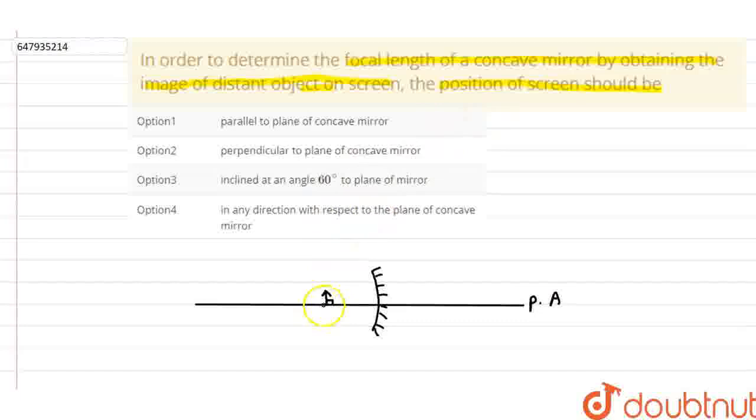So if you have clear and sharp image then the screen will be principle axis perpendicular so the object's image is perfectly focused. So the answer is